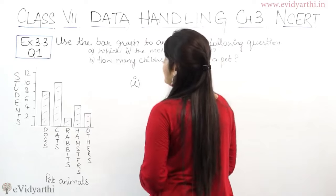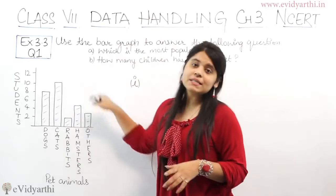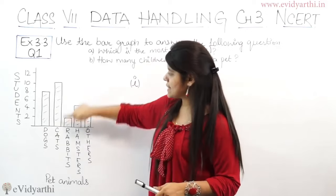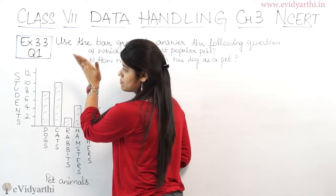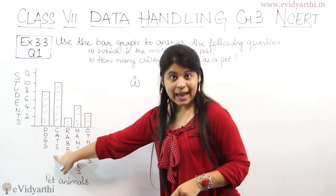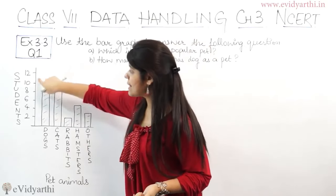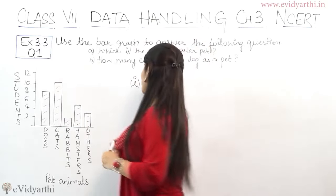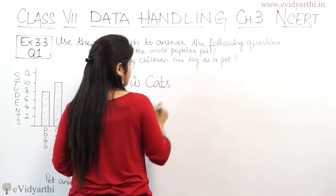Humse poocha which is the most popular pet. What is the most popular pet? Agar numbers naa bhi dekho, toh aap dekhoge jo bar tallest hai — this is the tallest bar, matlab ki sabse zyada students ke paas, jo sabse popular pet hoga. That is cats. Because is ka bar sabse zyada hai, and this is around 10 students ke paas hai. So first part ka answer ho jayega — cat.